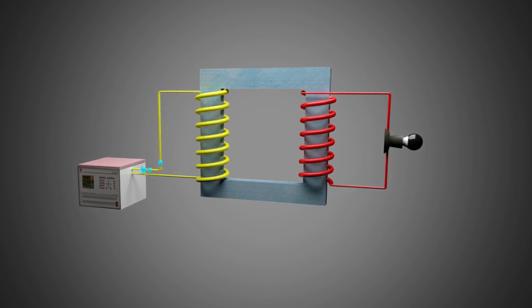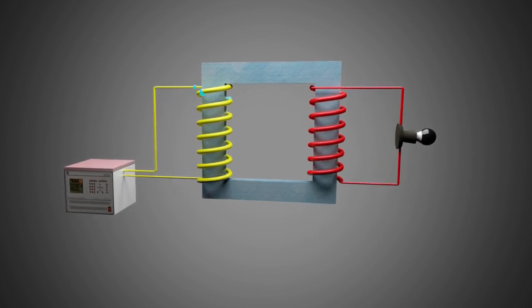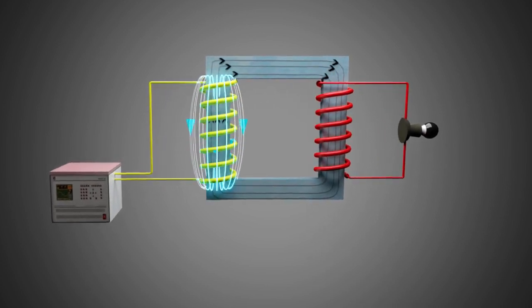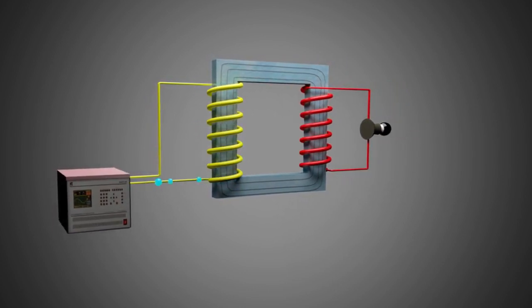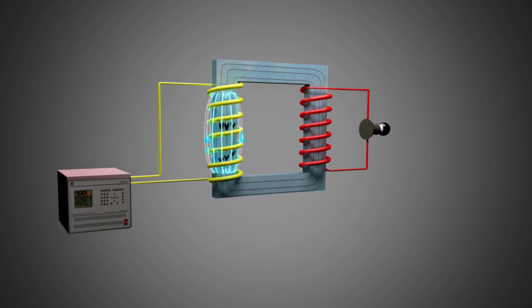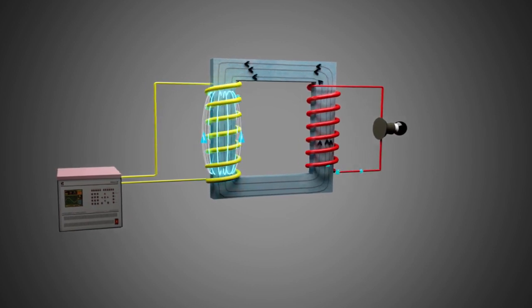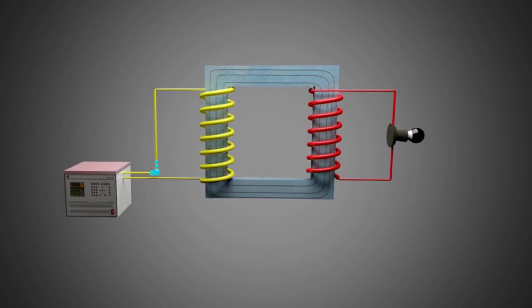The flux produced by the primary coil will travel through the magnetic core and reach the secondary coil, which is wound on the right limb of the core. This coil experiences a changing magnetic field and an EMF will be produced in it. We get the changing magnetic field as the AC current flows in the primary coil.